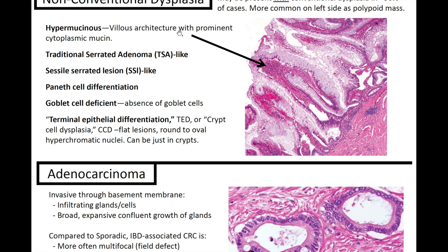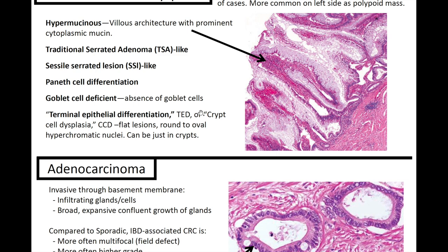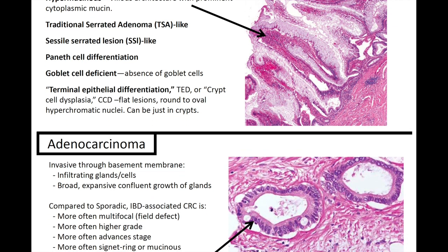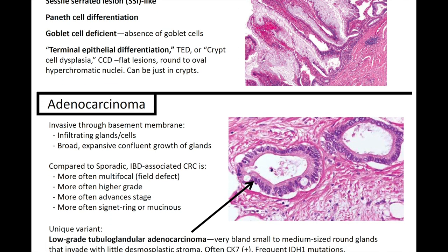Non-conventional dysplasia can also occur in IBD and may be present with conventional dysplasia in about 50% of cases. It's more common on the left side as a polypoid mass. Examples include hypermucinous dysplasia — with villous architecture and prominent cytoplasmic mucin — as well as TSA-like, SSL-like, Paneth cell differentiation, goblet cell deficient, and terminal epithelial differentiation. Patients diagnosed with IBD are regularly screened for dysplasia, and it's important for pathologists to be aware of these non-conventional dysplastic subtypes to report them and provide better patient care.